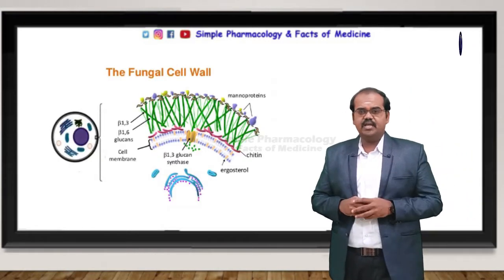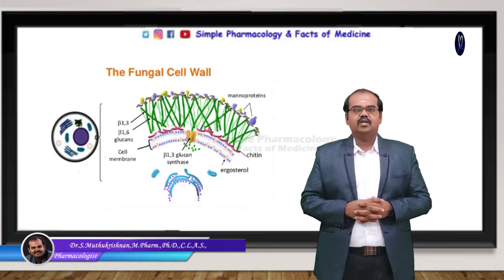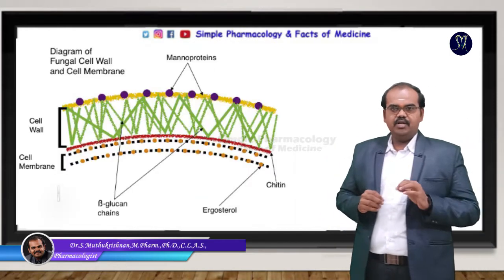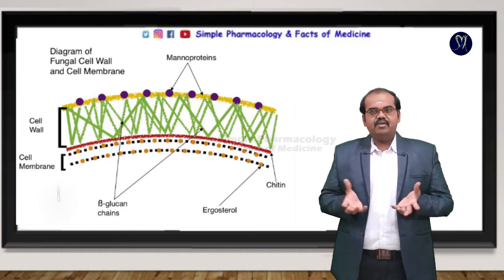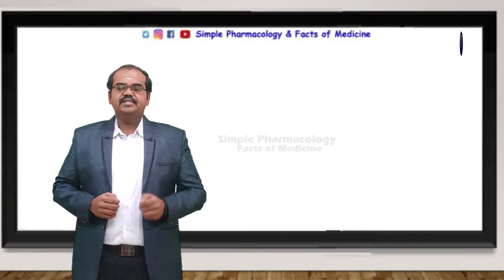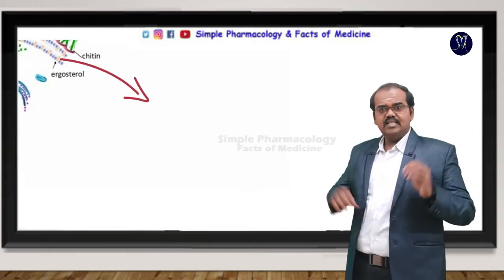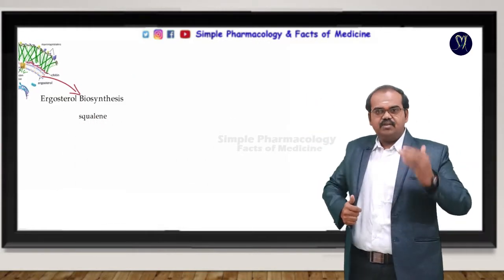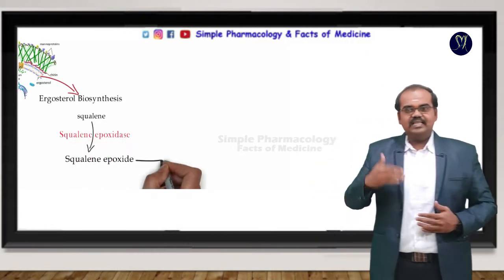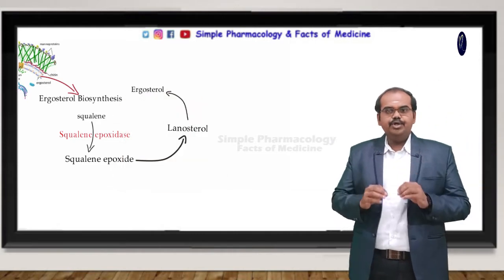Fungi are a good example of eukaryotes — they have an outer cell wall, cell membrane, and a definite nucleus. Ergosterol is one of the main components in the formation of the fungal cell membrane. Fungi are capable of synthesizing ergosterol through their own indigenous pathway. The raw material is squalene; squalene is converted into squalene epoxide, which is then further converted into lanosterol.